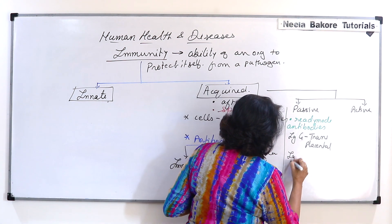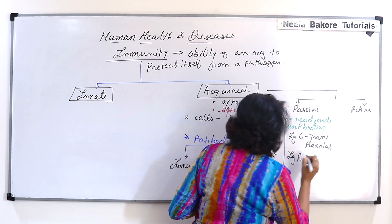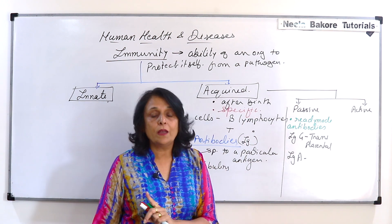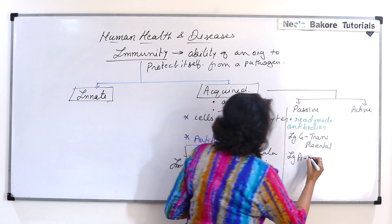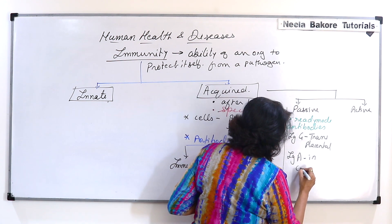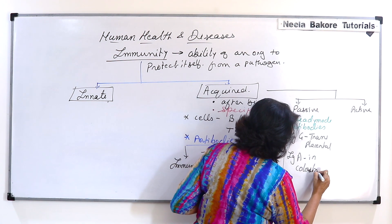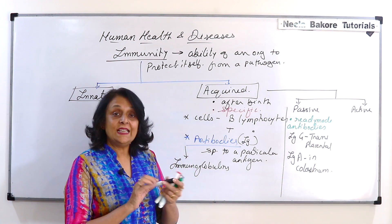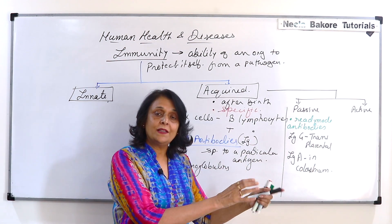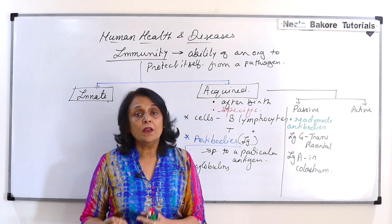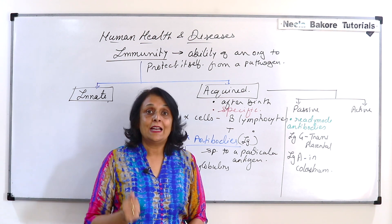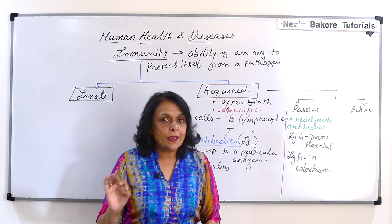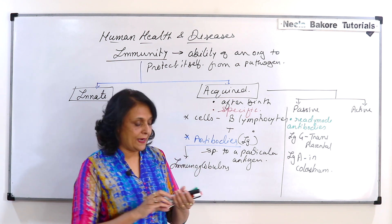Similarly, there is IgA, which is passed on to the newborn along with milk — it is present in colostrum. So these are prepared by the mother and passed on to the baby or fetus, meaning the baby's body is not doing anything; it is getting ready-made antibodies.